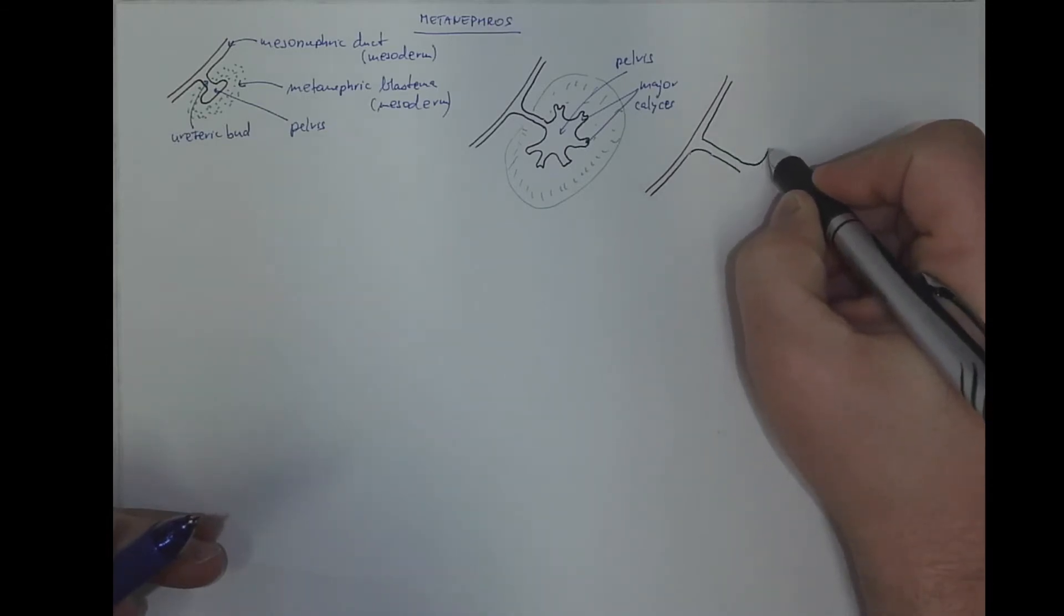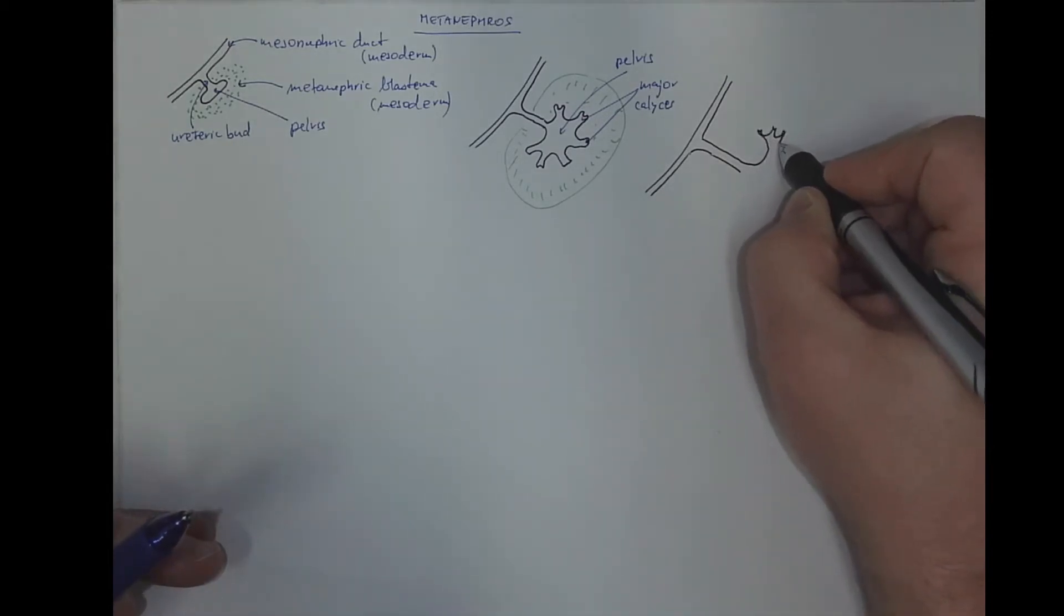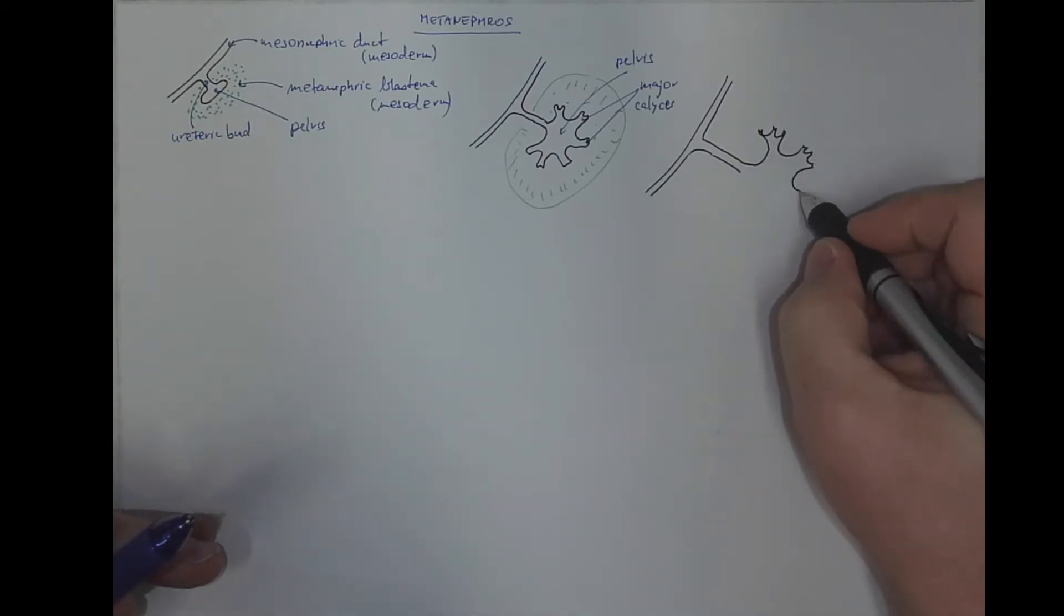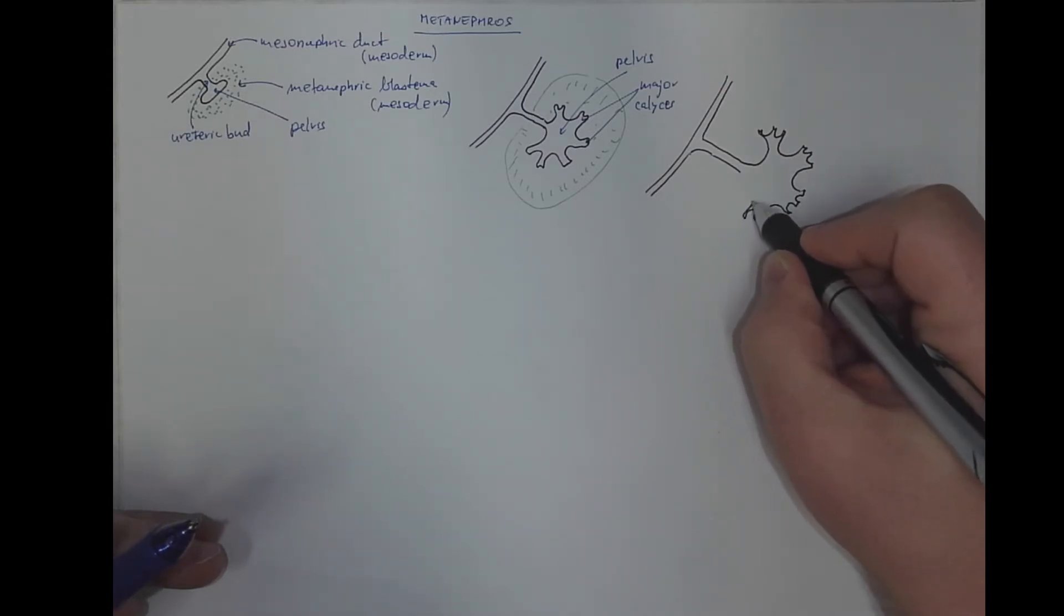And the major calyces are branching into the minor calyces. So the typical structure of the branches of the kidney pelvis originates.